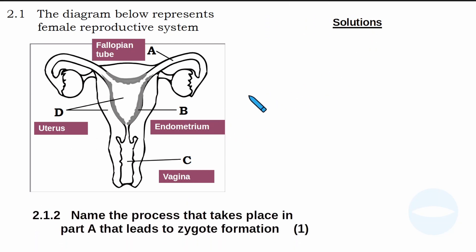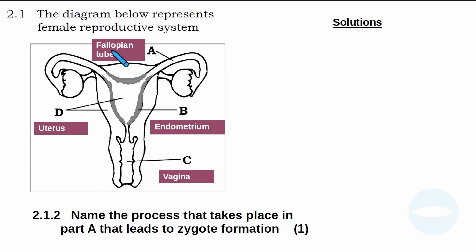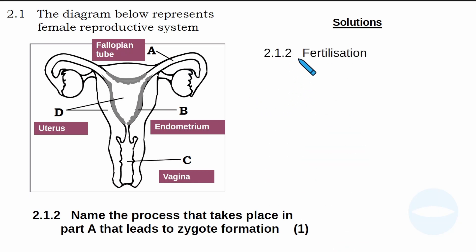The next question, 2.1.2, says: name the process that takes place in part A that leads to zygote formation. A zygote is formed when the sperm cell fuses with the egg cell. Part A is the fallopian tube. The process that takes place in the fallopian tube is fertilization. So the answer here is fertilization.